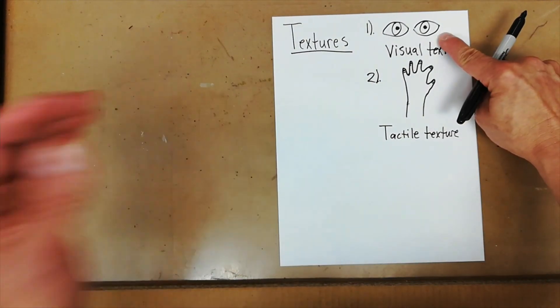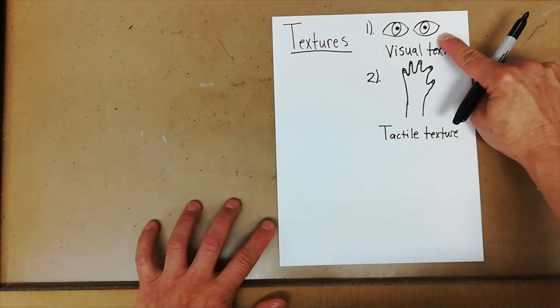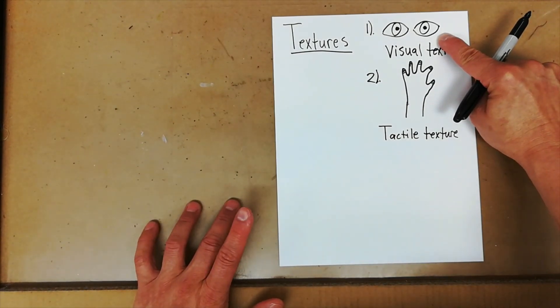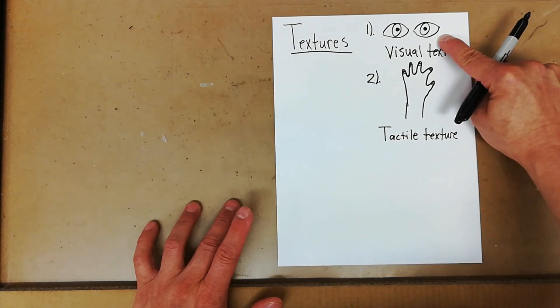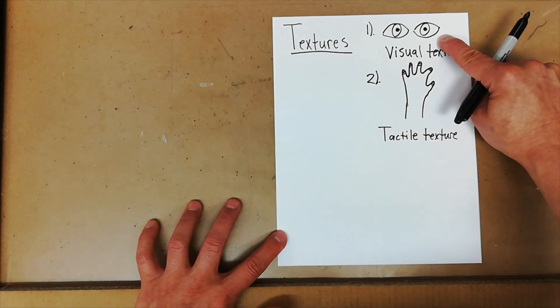Visual texture is texture that we can only see, like a picture or a painting. A picture or a painting of something doesn't mean that it's going to look and feel the same. We talked about the painting of the woman with a dog. When you look at the painting, it looks like a dog, but you can't feel the fur.